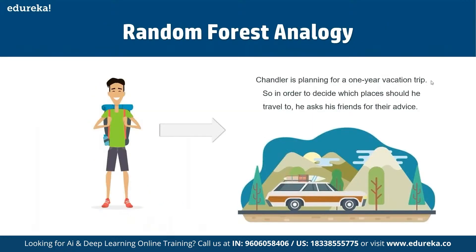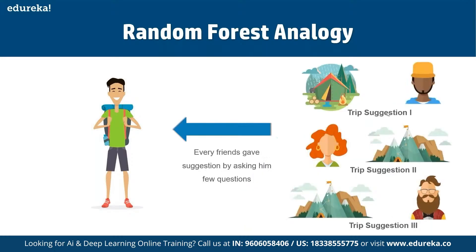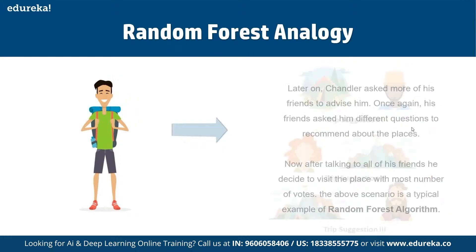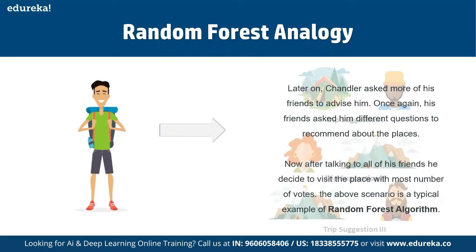A random forest analogy: Chandler is planning a one-year vacation trip. To decide where to travel, he asks his friends for advice. He gets different suggestions — one friend recommends trekking, another suggests hiking, and so on. Every friend asks him different questions before making a recommendation. After talking to all his friends, Chandler decides to visit the place with the most number of votes. This scenario is a classic example of the random forest algorithm.